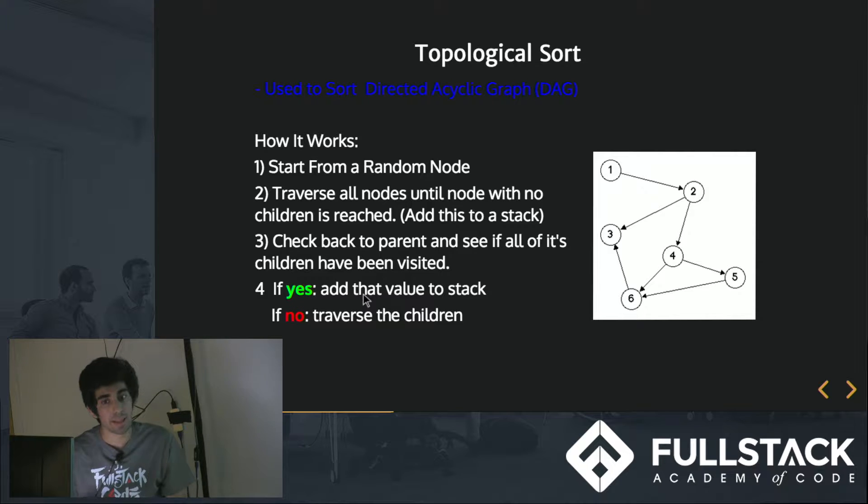which is a leaf, meaning that they have no dependency on it. And once you find that, you can add that to a stack, and then you traverse back to the parents and check when you reach a parent, does that have any more dependencies? If it does, then you can add a parent to the stack. And if it does have a dependency, then you can go to that dependency and keep checking.